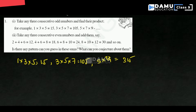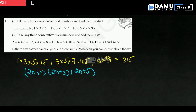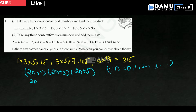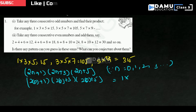This pattern is there. For odd numbers, the pattern will always be (2n+1) into (2n+3) into (2n+5), where n values are 0, 1, 2, 3 and so on. If you substitute n=0, we will get 1 into 3 into 5, which gives us the first set of consecutive odd numbers.